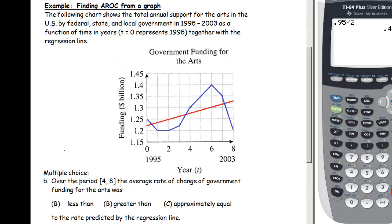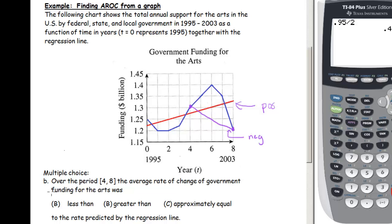Part B asks the same question for the interval 4 to 8. Drawing in the two points at t=4 and t=8, we compare the purple secant line with the red regression line. The purple line has negative slope, while the red line has positive slope. Since a negative slope is less than a positive slope, the average rate of change is less than that predicted by the regression line.